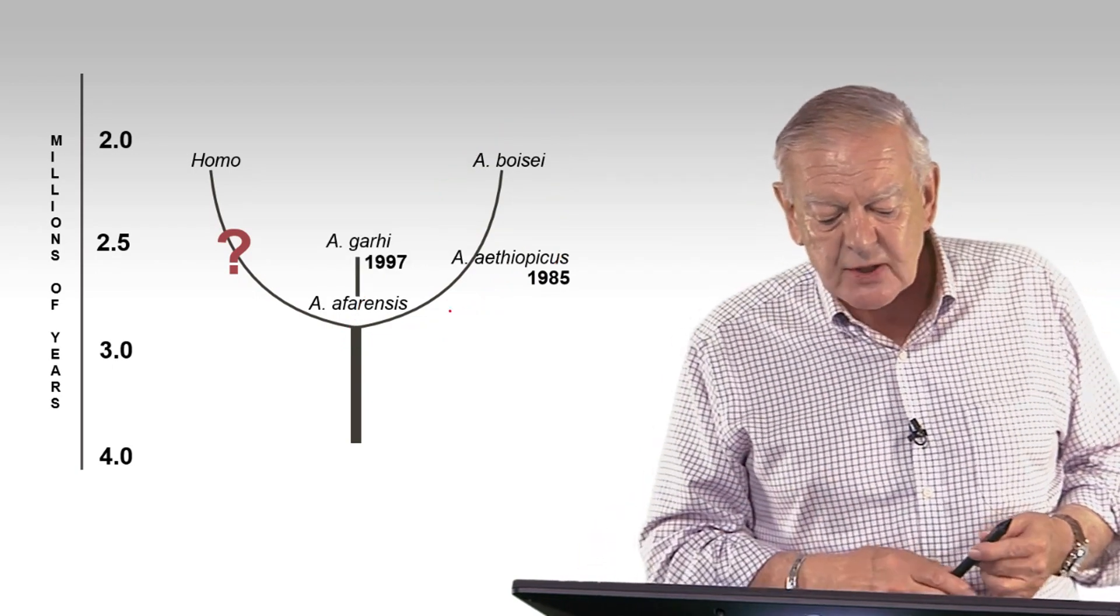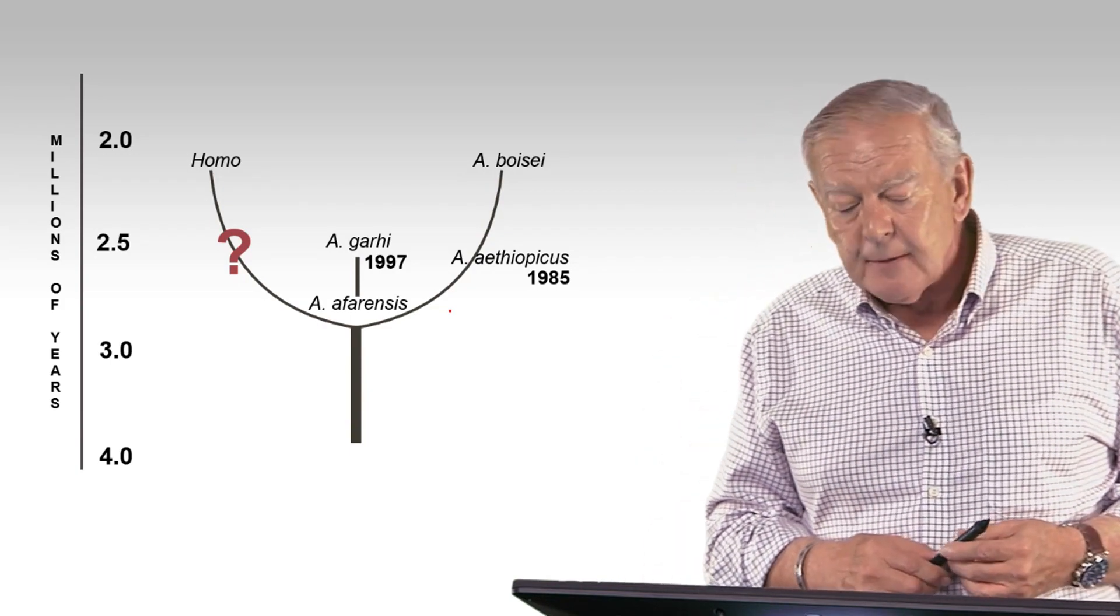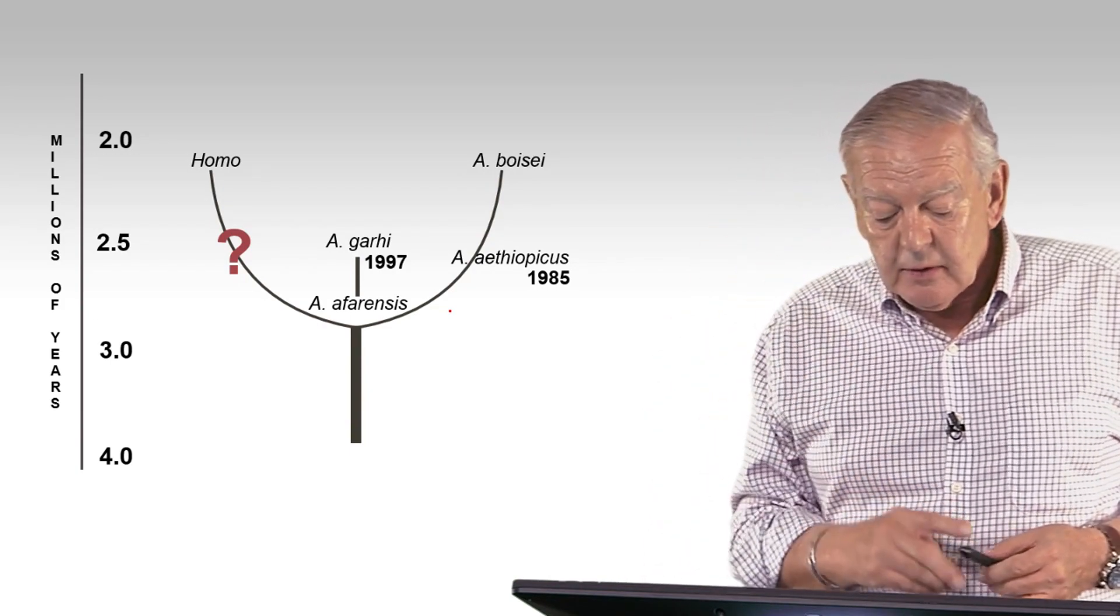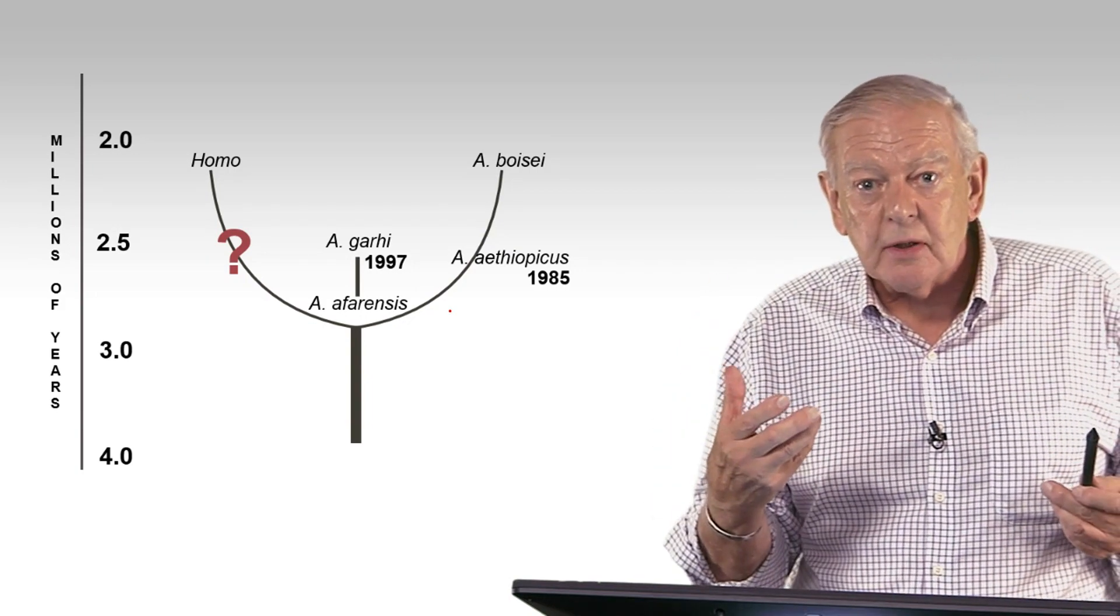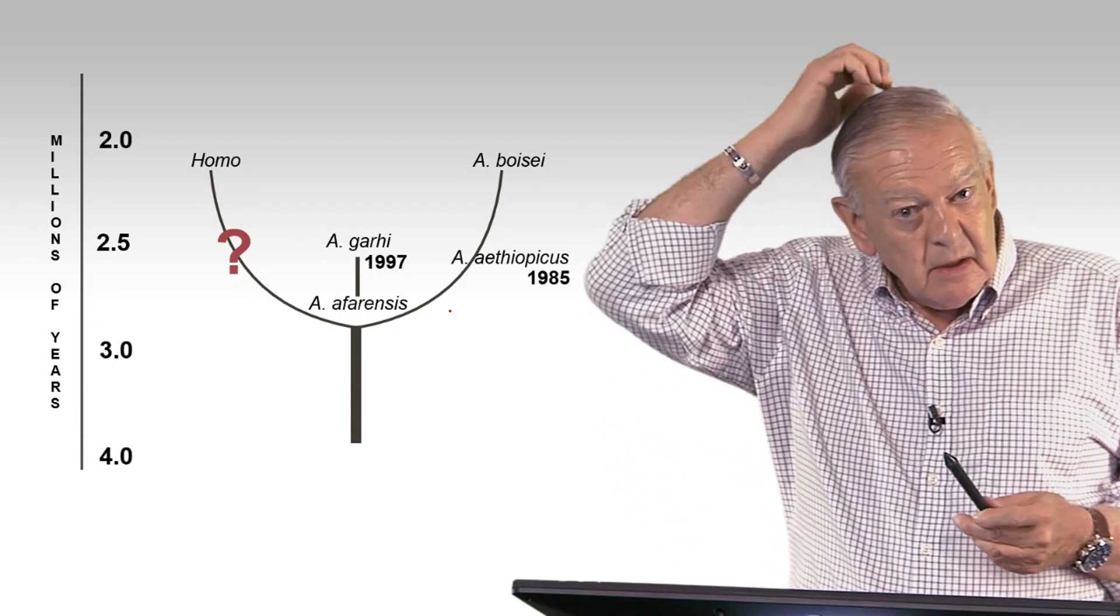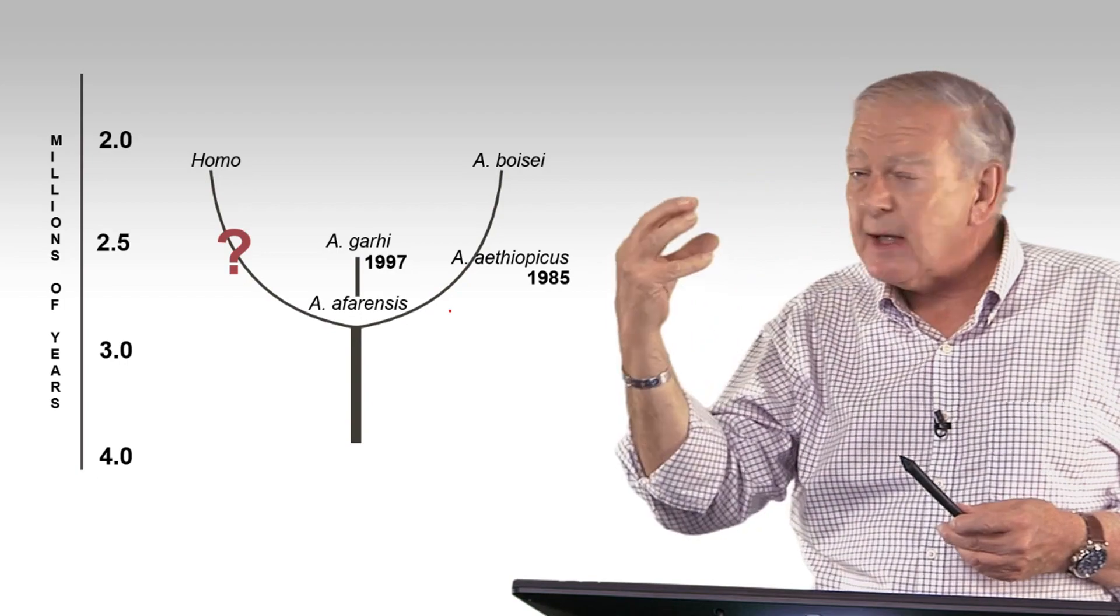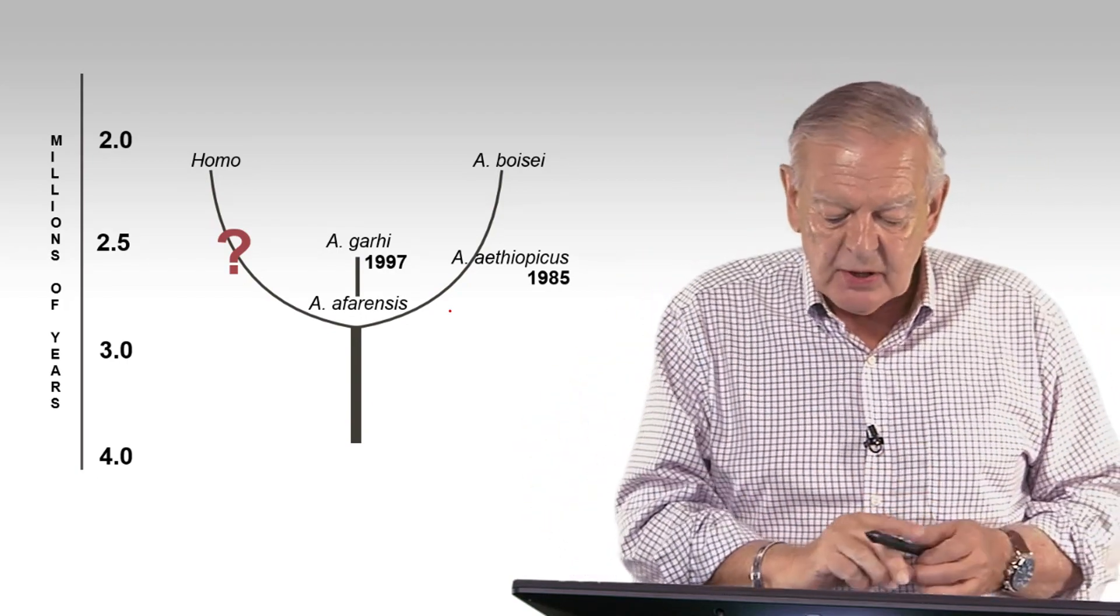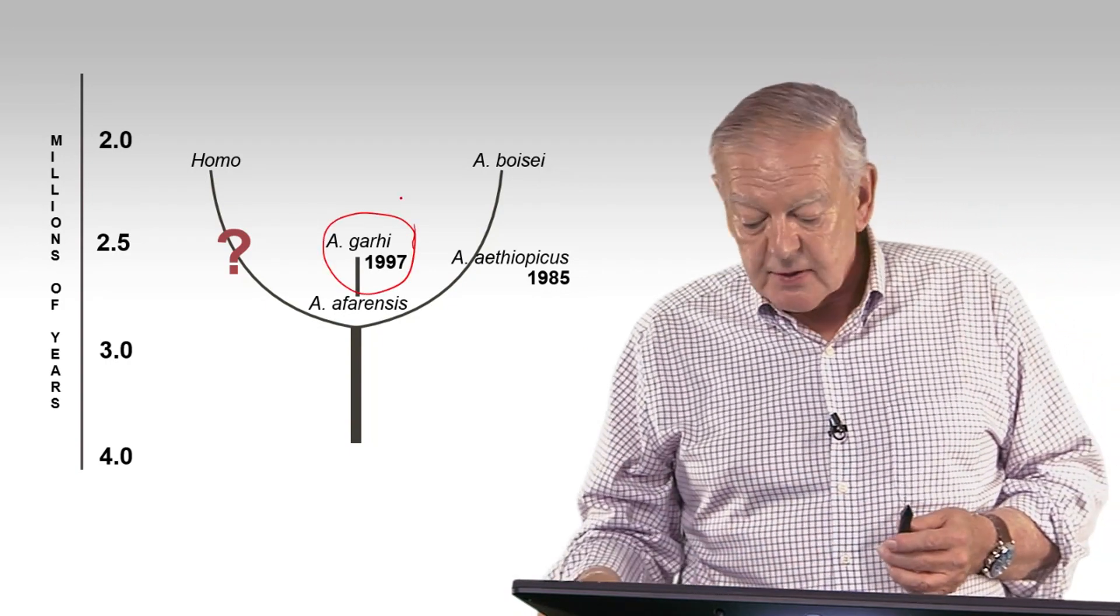Well, we had to wait a little bit. In 1997, in the middle Awash, a cranium was found known as Australopithecus gari. It had big crushing molars and premolars. It had a little crest on the back of the skull and it had a projecting face. It wasn't Aethiopicus. It was a different species and probably another descendant of Afarensis, in my opinion.